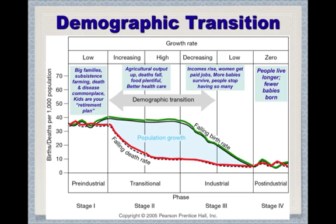This is the demographic transition diagram. The x-axis represents stages of time in general — from pre-industrial subsistence agriculture, through production agriculture where a surplus is produced, to industrial where people have jobs in manufacturing, to post-industrial where it's a service economy as well as manufacturing.